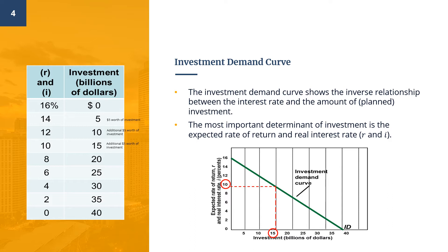Interest rate is the cost of borrowing. So the lower the interest rate, the more money will be borrowed to fund investments, and thus the quantity of investment demanded will be higher, and vice versa. For each rate of return, we add the amounts of investments that will yield that particular rate of return or higher. For example, if the rate of return is 10%, this means there are $15 billion worth of investment opportunities that will yield an expected rate of return of 10% or more. That $15 billion includes the $5 billion of investment expected to yield a rate of return of 14% or more, plus the $5 billion expected to yield between 10% and 12%.